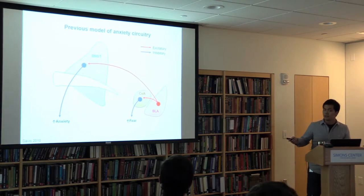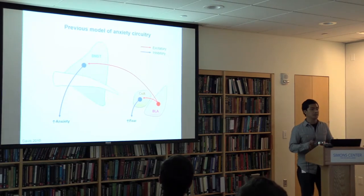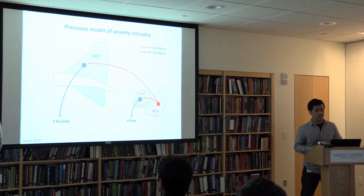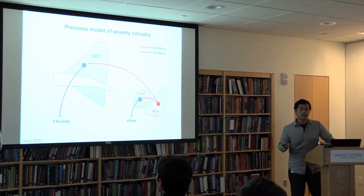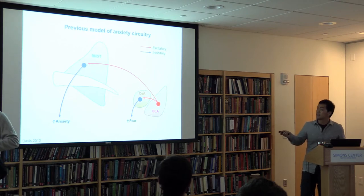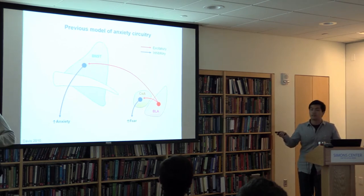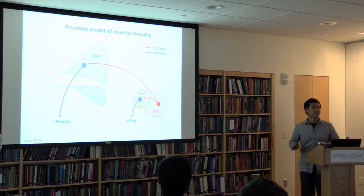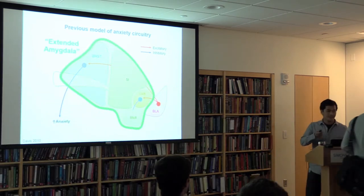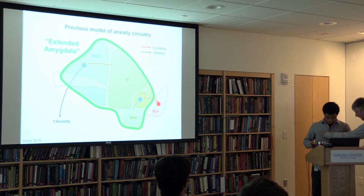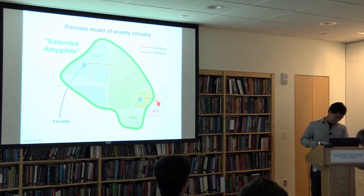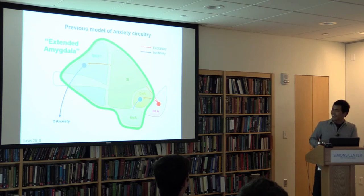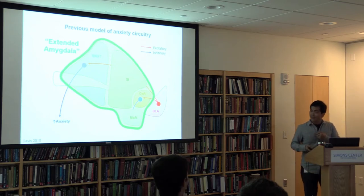This is the previous model of anxiety circuitry, based on numerous studies employing lesion pharmacology and electrical stimulation. It was suggested that the basolateral amygdala sends projections to both the central amygdala and the bed nucleus of the stria terminalis, or BNST, to trigger the expression of fear and anxiety.